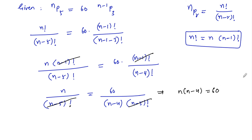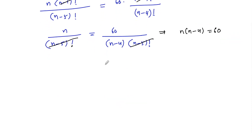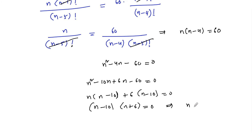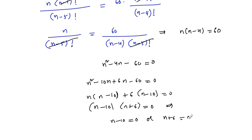By cross multiplication, n into n minus 4 is equal to 60. Simplifying, we get n squared minus 4n minus 60 equals 0. On factorization, we get n squared minus 10n plus 6n minus 60 equals 0. Taking common factors: n(n minus 10) plus 6(n minus 10) equals 0, which gives n minus 10 into n plus 6 equals 0.